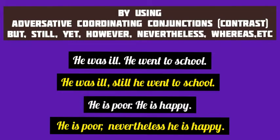Adversative coordinating conjunctions such as but, still, yet, however, nevertheless, whereas, etc., denote contrast or opposite ideas. By using this type of coordinating conjunction, simple sentences are combined into a compound sentence. 'He was ill' and 'He went to school' are the two simple sentences in the first example. They convey a sense of contrast, so by using the adversative conjunction 'still' we combine them: 'He was ill, still he went to school.'